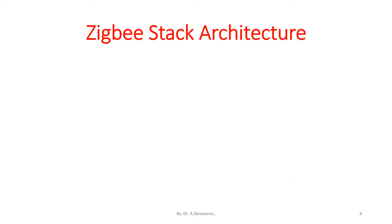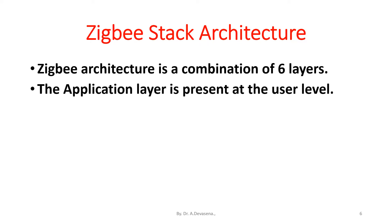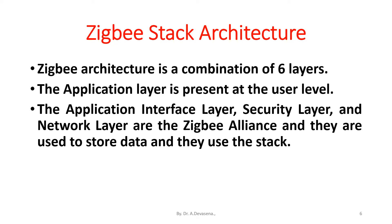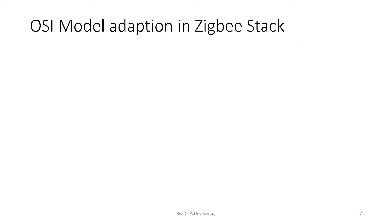ZigBee stack architecture. ZigBee architecture is a combination of six layers. The application layer is present at the user level. The application interface layer, security layer, and network layer are defined by the ZigBee Alliance and are used to store and manage data. The medium access control and the physical layer follow the IEEE 802.15.4 standard. The OSI model adaptation in the stack is shown here.